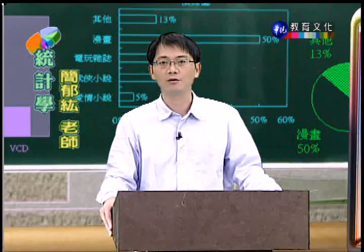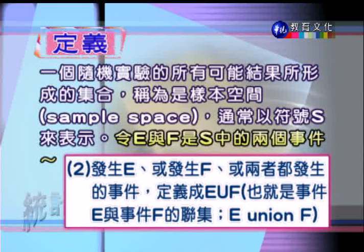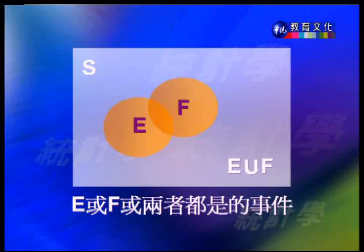第二種關係叫做聯集（union）。聯集是指發生 E 或發生 F，或者兩者都發生的事件，符號寫成 E∪F。從圖形解說，E 與 F 有重疊，把這兩塊加起來的部分就是 E 與 F 的聯集，也就是只要 E 事件發生，或 F 事件發生，或兩個同時都發生，通通都算 E∪F 這個事件發生。